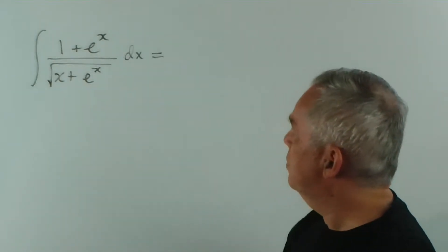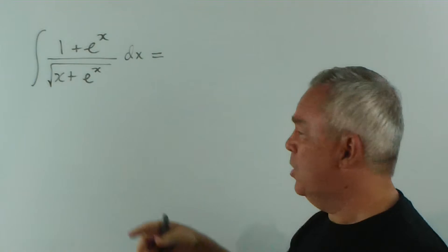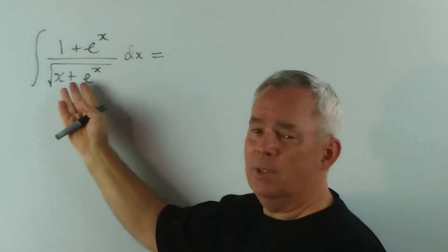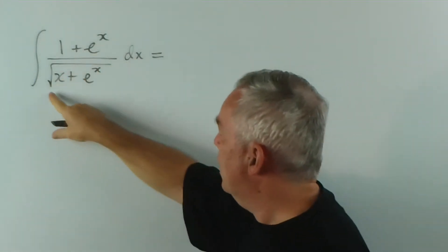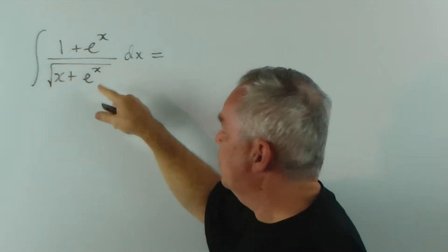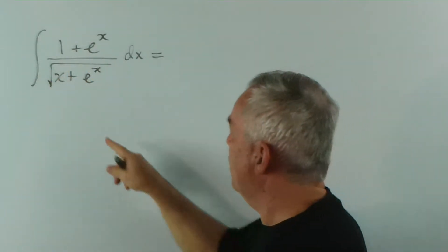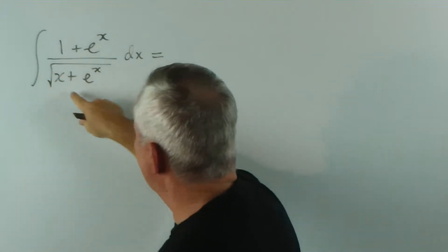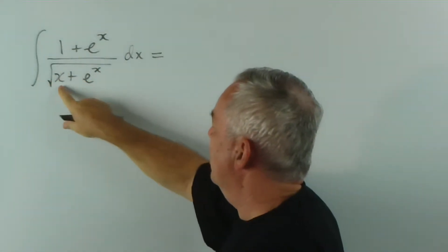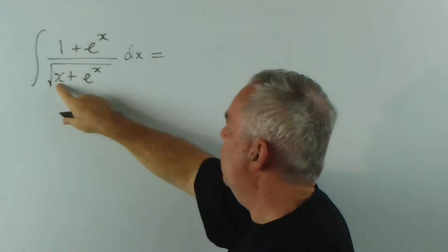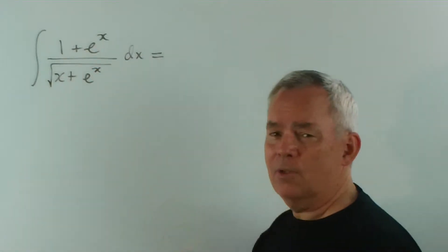Hopefully, one of the first things you will check, since there's a fraction, is to see what the derivative of the bottom will bring you. If we look at the contents inside the square root, the derivative of x plus e to the x is 1 plus e to the x, which is what we have on top.